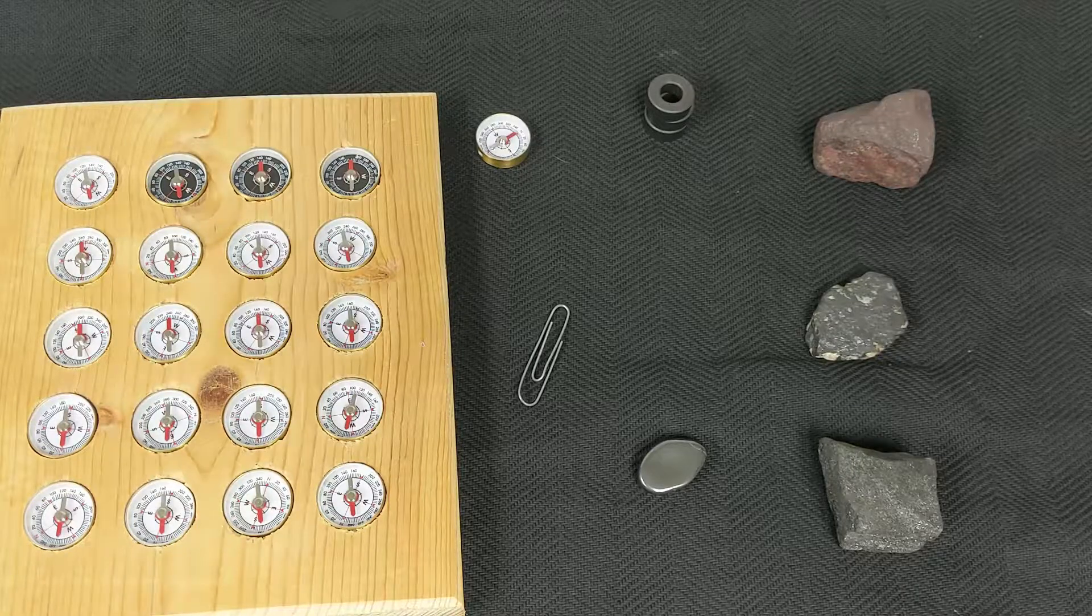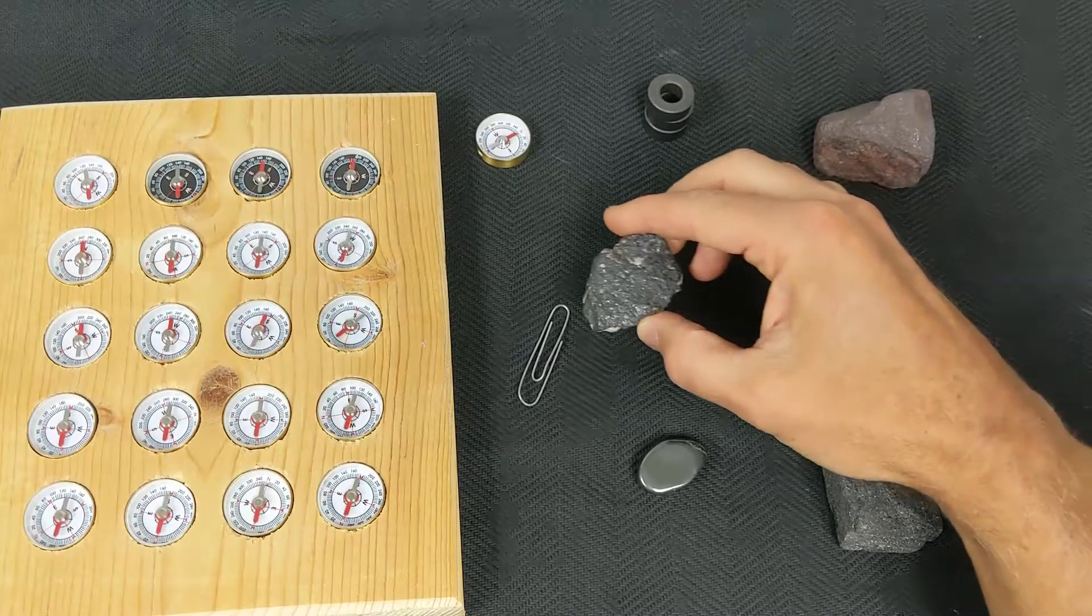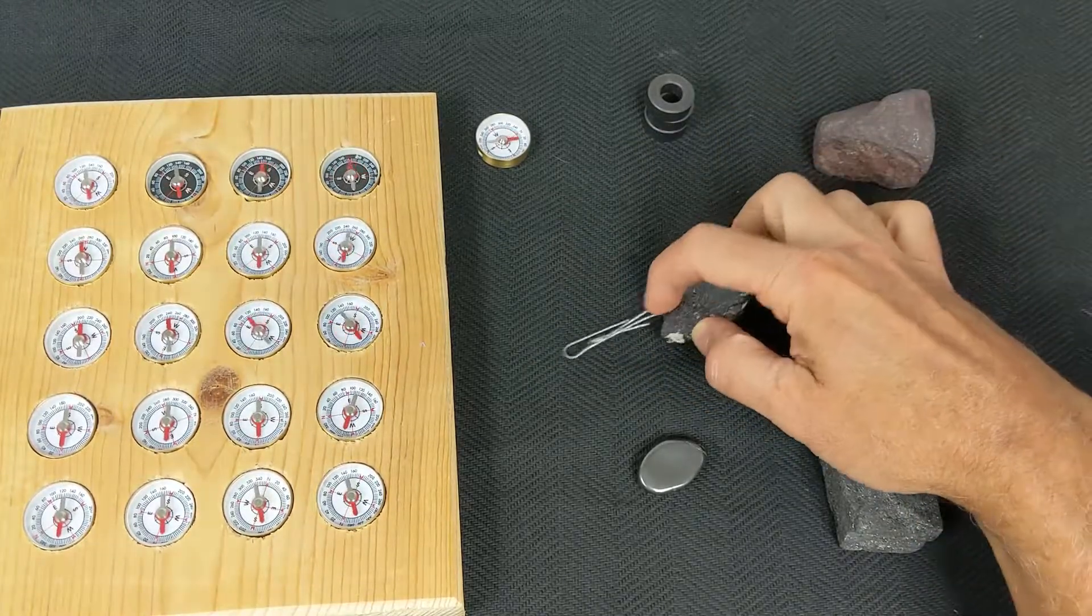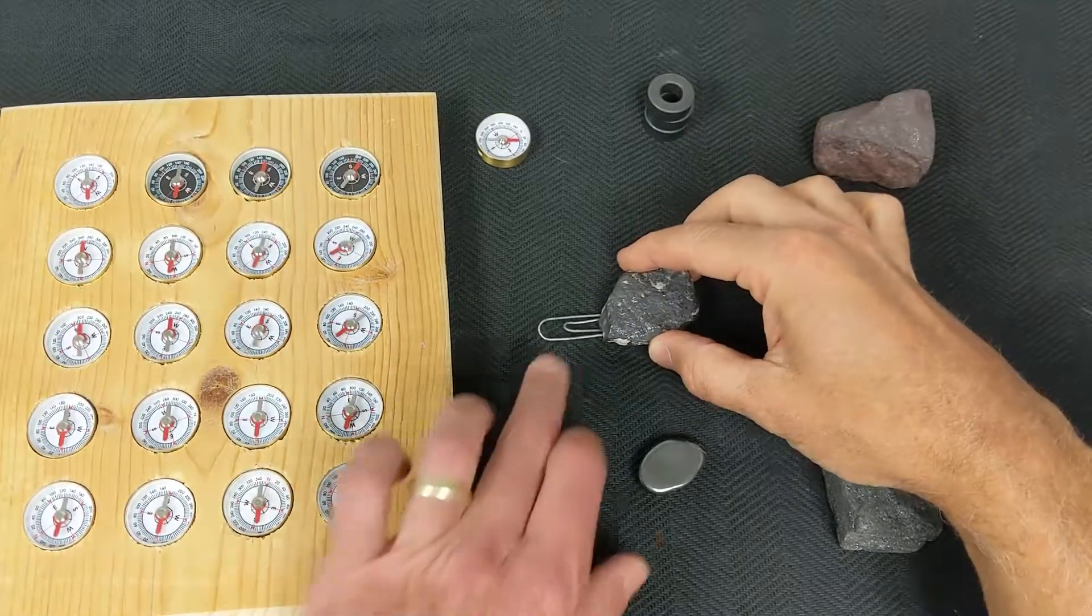Magnetism is an important property for many iron-rich minerals. Minerals such as this magnetite are often described as being strongly magnetic. You can see we can actually pick up this paper clip with this piece of magnetite. It's a natural magnet.